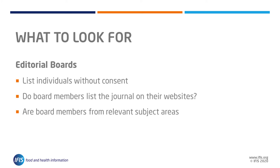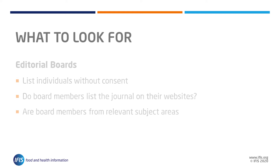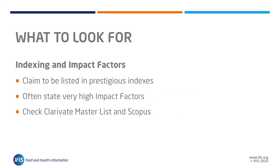Editors and editorial boards: deceptive journals often list people who have not given their consent to be an editor or a member of the editorial board, to give a better impression of status and prestige. Check some of the names of board members to see if they state the journal position on their own websites. Can you find them at the institutions the predatory journal claims they are at? Are they in the same subject area as the journal? Does anything else seem amiss with the appointment?